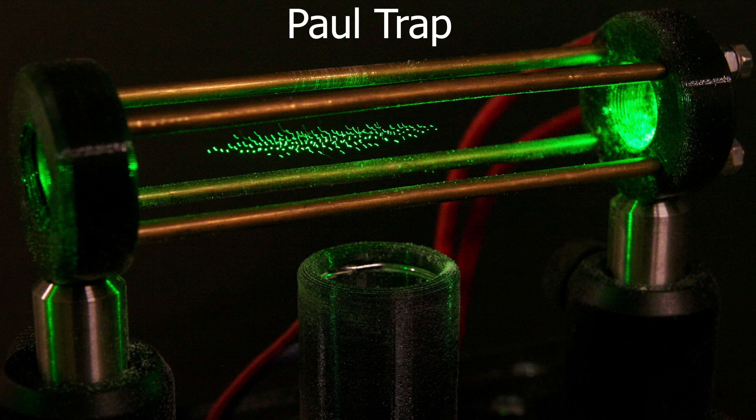In a Paul trap what you're doing is instead of spinning something you're alternating the electric fields so they go positive negative positive negative so it's attractive and repulsive at different times. And if you match it just right you can actually get the ion to stay right in the center of the trap just like we were able to get the ball to stay right at the center of our gravitational trap.